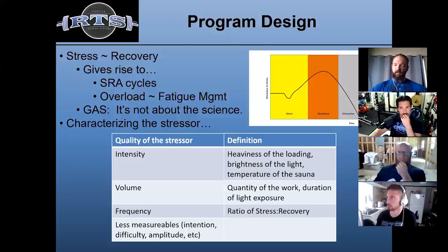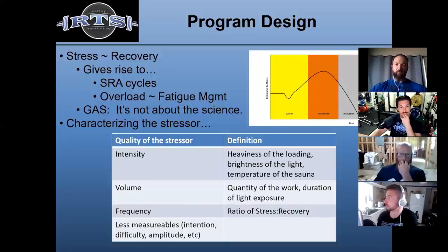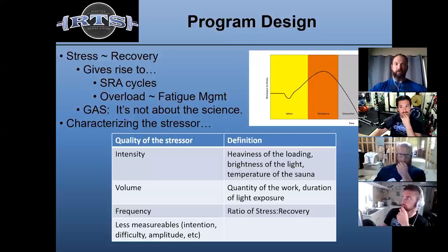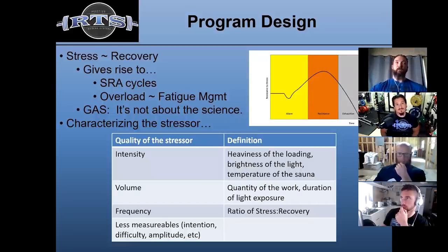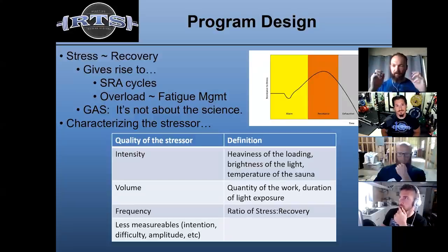We lose a lot of the nuance for different qualities by oversimplifying. For example, intensity — we now think of intensity as percent of one rep max, as if those are synonymous. But I don't think they are. In exercise science, you need to mathematically define variables to test hypotheses, so defining intensity as percent 1RM is useful. But from a holistic program design standpoint, intensity is the intensity of the stressor — it's the brightness of the light, the temperature of the sauna, the intensity of this stressful input.